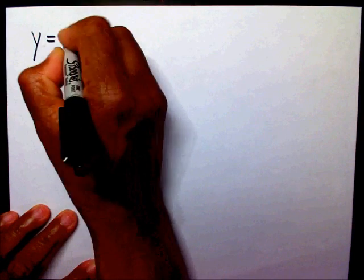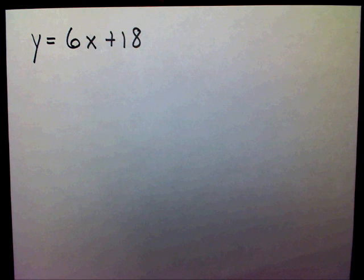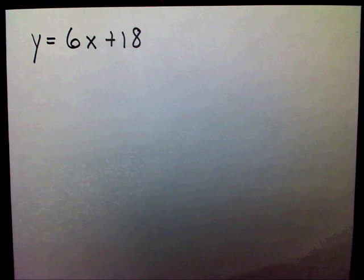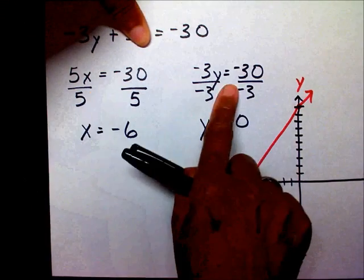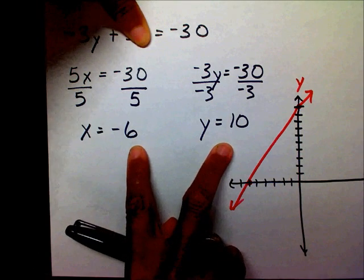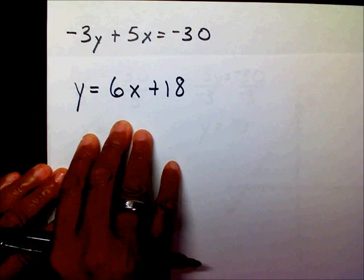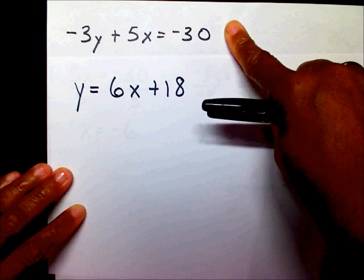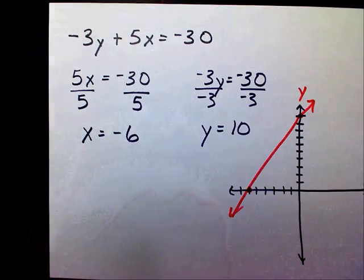So I have the equation y equals 6x plus 18. As you can tell, this is not in standard form, so we can't use the same process we used for standard form. Standard form was pretty simple — in the standard form video, we just covered up our term and we were able to find our x and y intercepts. So we want to change this slope intercept form into standard form, which is a very simple process.